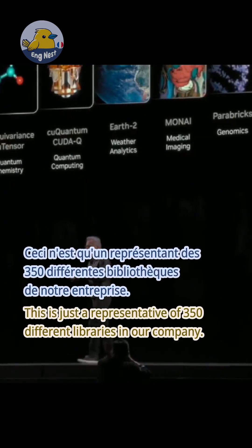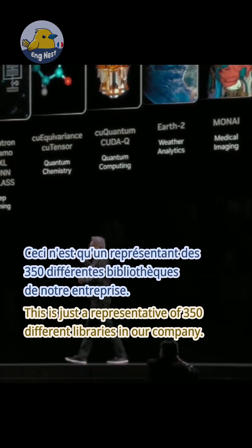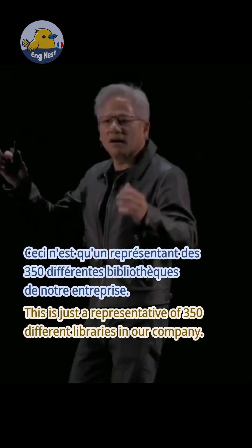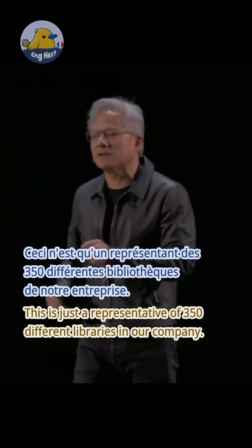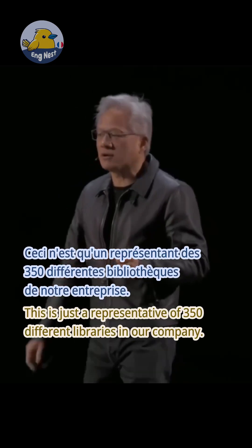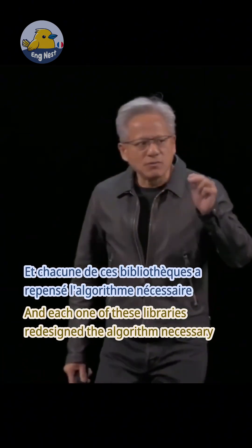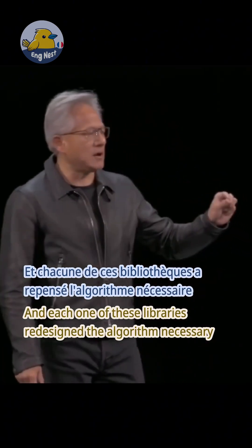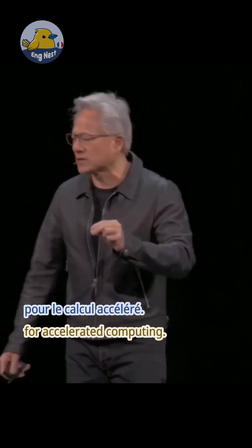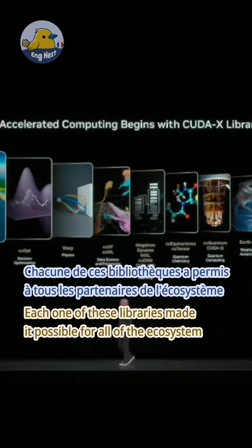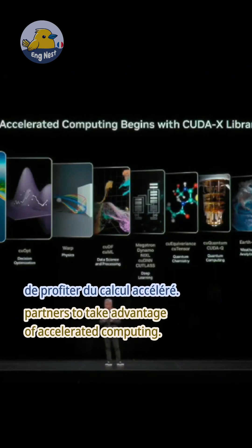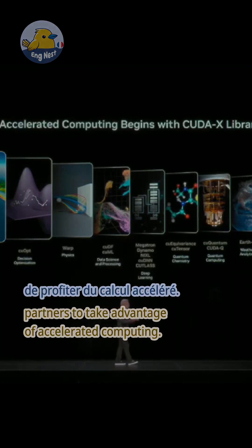The list goes on — genomics processing, Aerial (pay attention, we're going to do something really important here today), cuQuantum for quantum computing. This is just a representative of 350 different libraries in our company. Each one of these libraries redesigned the algorithm necessary for accelerated computing, and each one made it possible for all of the ecosystem partners to take advantage of accelerated computing.